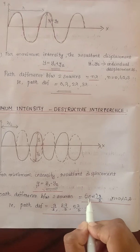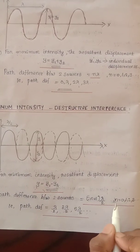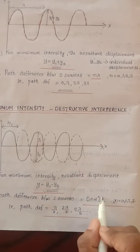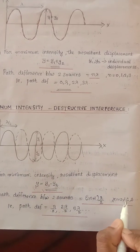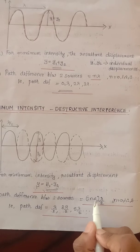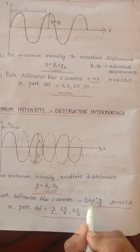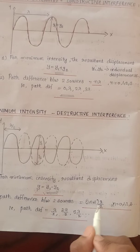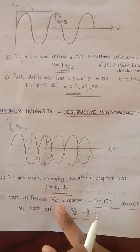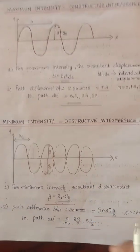We can combine this as: path difference equals (2n + 1) times lambda by 2. When n equals 0: 2 times 0 plus 1 equals lambda by 2. When n equals 1: 2 times 1 plus 1 equals 3 lambda by 2. When n equals 2: 2 times 2 plus 1 equals 5 lambda by 2. So path difference equals (2n + 1) times lambda by 2. Very important.